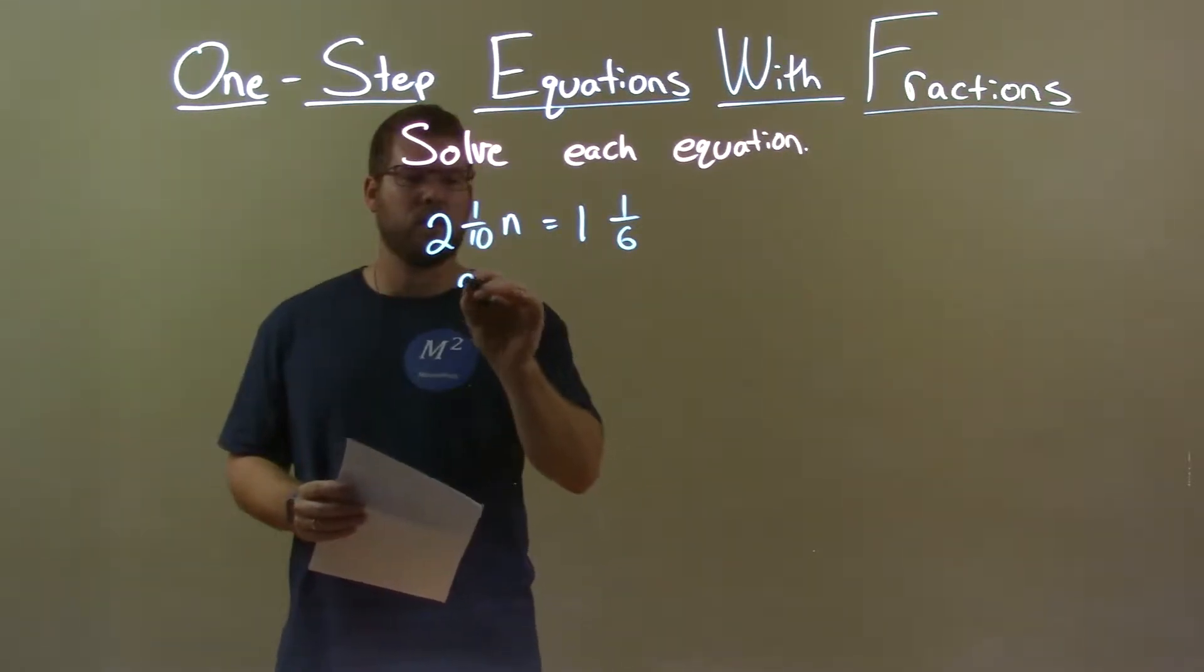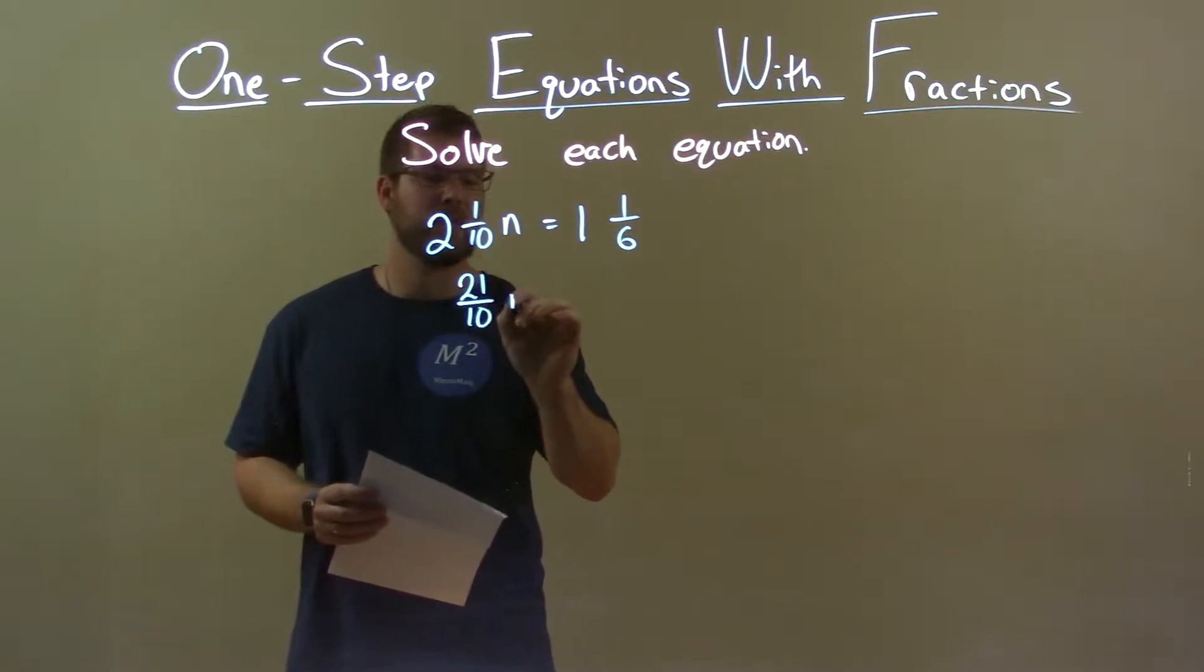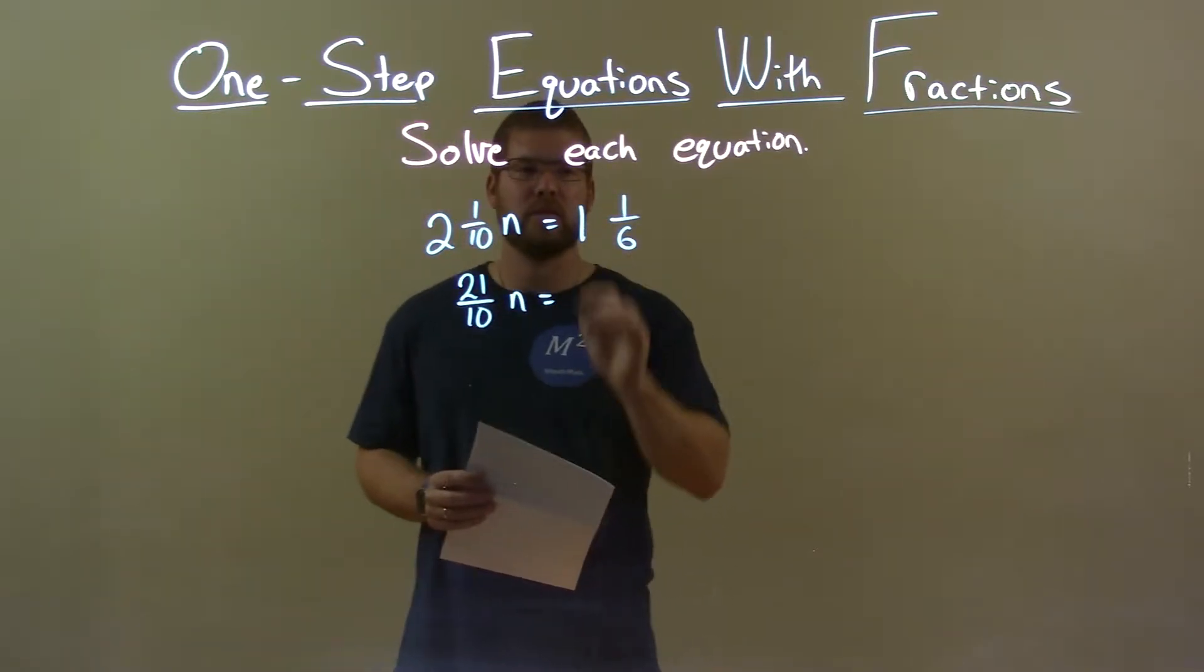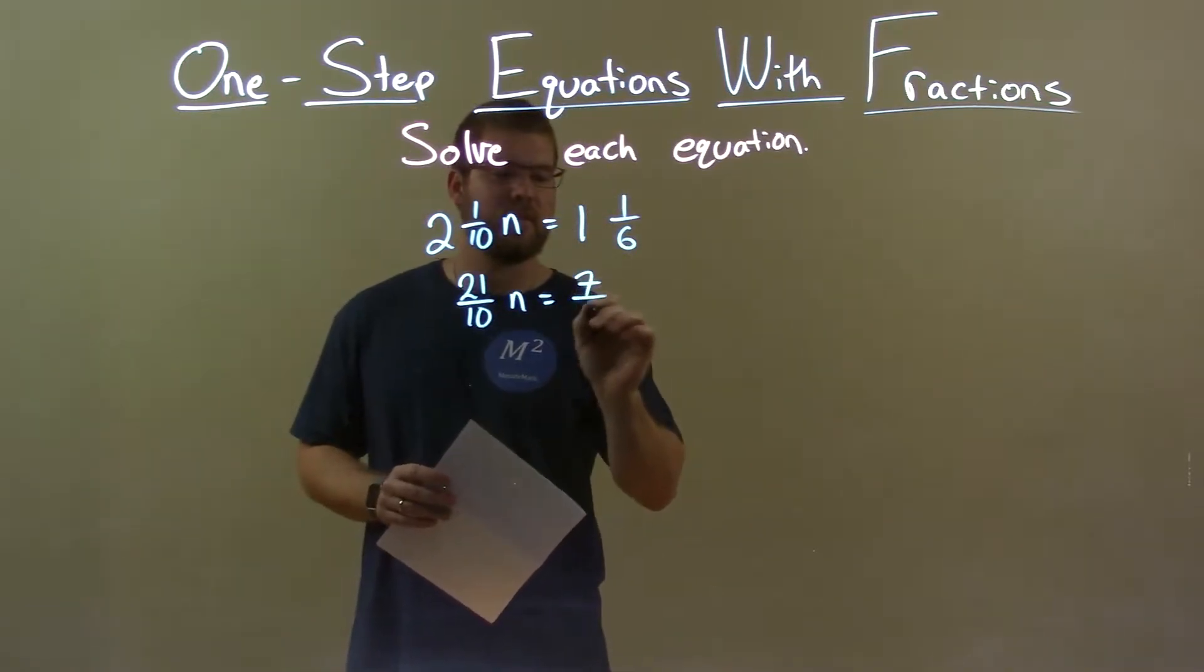2 times 10 is 20, plus 1 is 21. So we have 21 over 10 n equals 6 times 1 is 6, plus 1 is 7. 7 over 6.